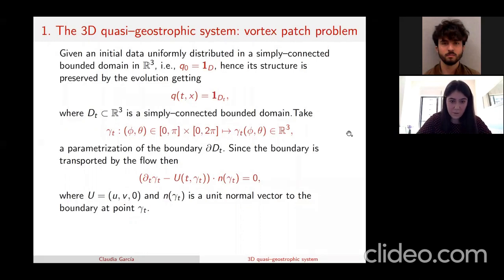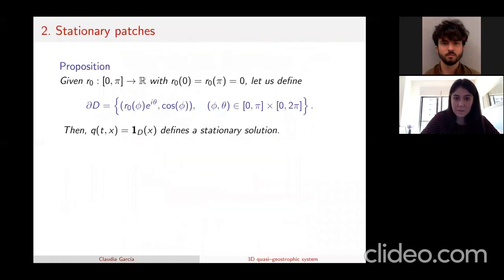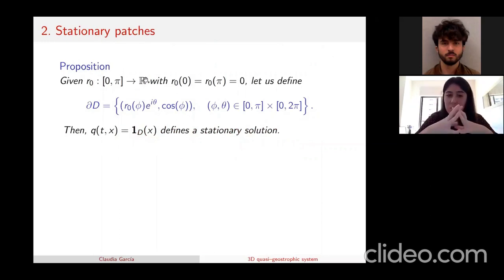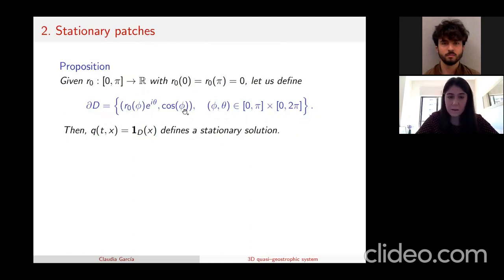Our main goal is to study special types of these solutions, which we call flat-type solutions. The first question is whether there are stationary patches, and the answer is yes — there are many. If we take a domain that is a revolution shape around the vertical axis and take r₀ to be the generatrix of this revolution shape, which is vanishing at the boundary (zero and pi), then we can define the boundary of the domain in cylindrical coordinates.